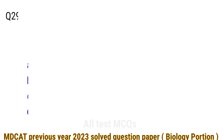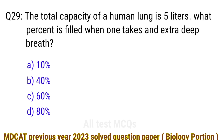Question number 29. The total capacity of a human lung is several liters. What percent is utilized when one takes an extra deep breath? The right answer is option D: eighty percent.